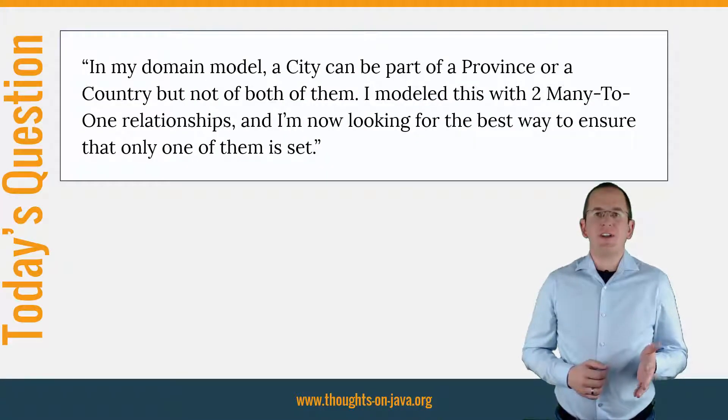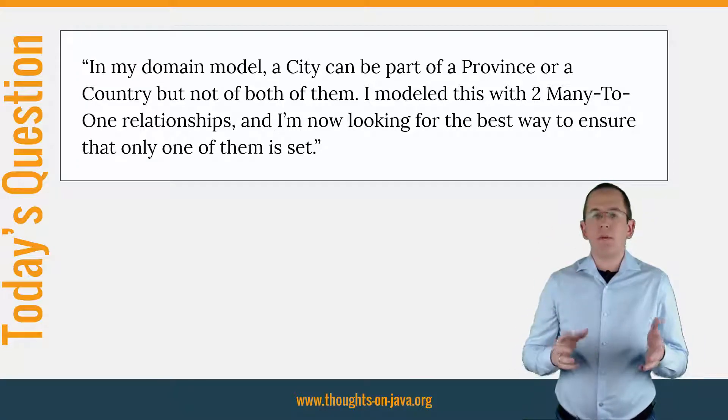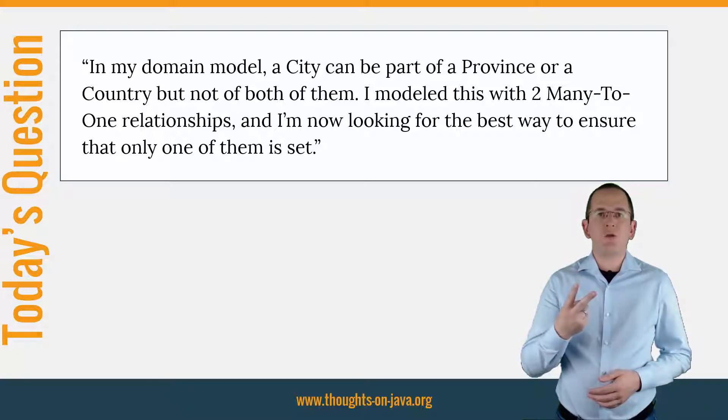Here is today's question. In my domain model, a city can be part of a province or a country, but not of both of them. I modeled this with two many-to-one relationships and I'm now looking for the best way to ensure that only one of them is set.